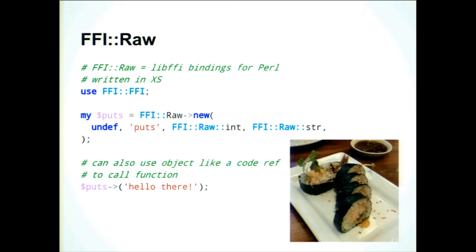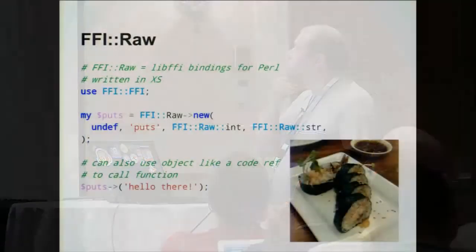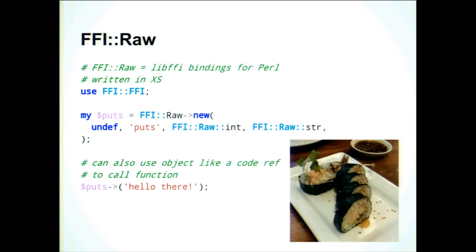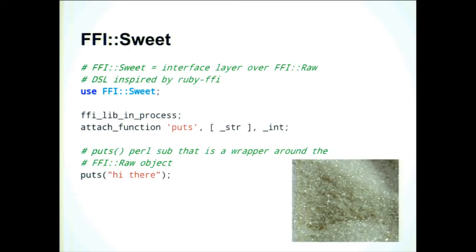Of the FFI interfaces I'm going to show you today, FFI-RAW is the most mature and can be used to write CPAN modules today because it works on almost all the platforms you'd want. FFI-RAW also accepted a patch from me which allows you to use undef as the library name in order to search the current process for symbols — handy because libc is called something different on just about every platform. The $puts object is an FFI-RAW object but can also be used like a code reference thanks to overloading.